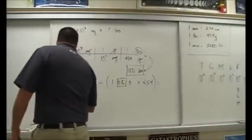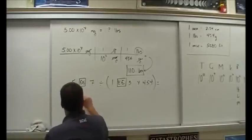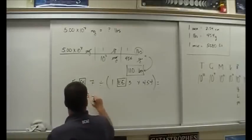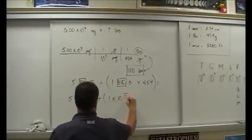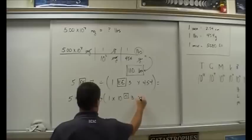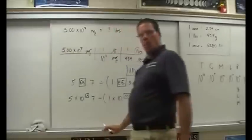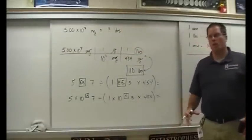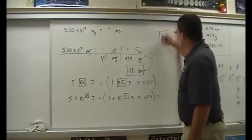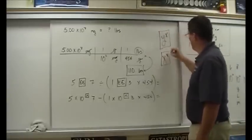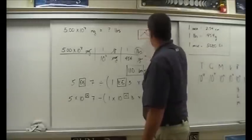Another way to type this in if you're going old school: instead of EE, you can use the EXP button or the caret button — it's an exponent button. Some calculators have different buttons for scientific notation — depends on your calculator. Whatever works for you.